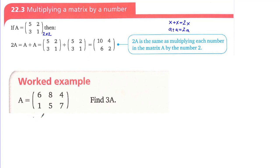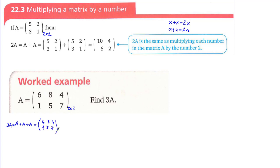Now we are going to solve the question. There are two ways to solve it. This is a 2 by 3 matrix. I'm going to write A plus A plus A instead of 3A to prove it one more time. So it's equal to [6, 8, 4; 1, 5, 7] plus...